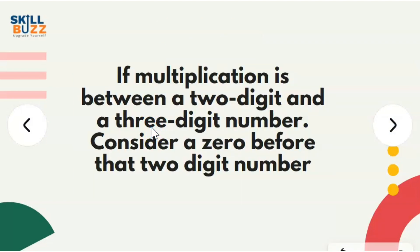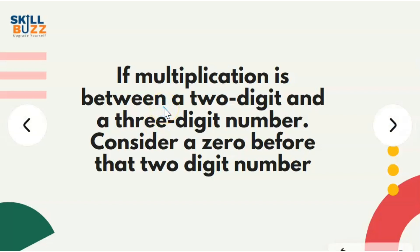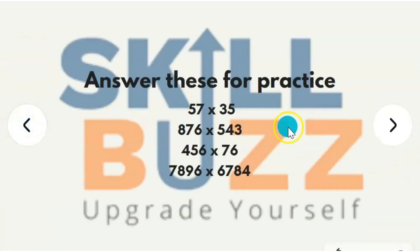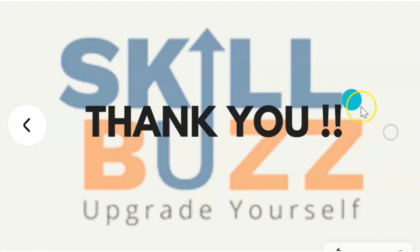Now imagine you need to multiply a two-digit number by a three-digit number. Just consider a zero before the two-digit number and solve it the same way. Same goes if you have a three-digit and four-digit multiplication: add a zero before the three-digit number and all the calculations will work. So here are some questions for practice. I would love it if you send your answers in the comment section. Thank you.